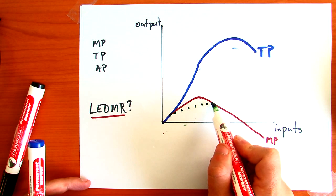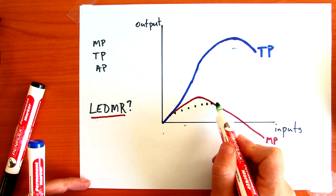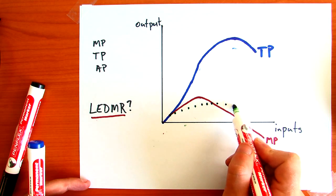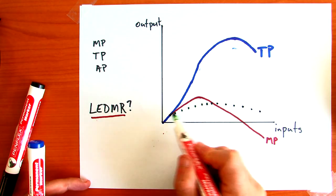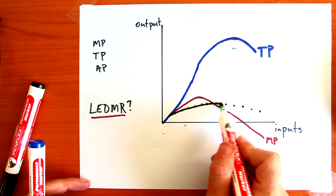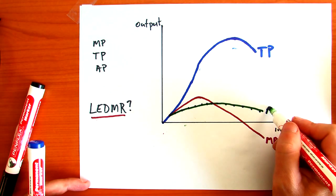and from this point forward, marginal production is less than average production, so average production is going to fall. So then this line is our average product.